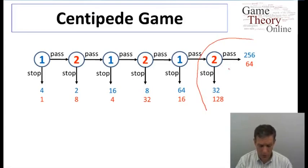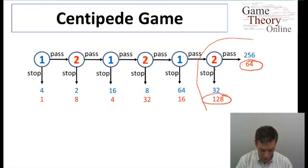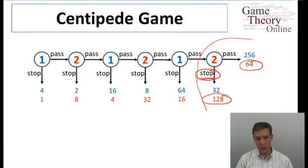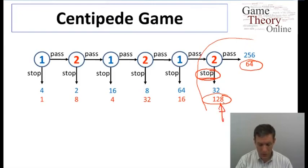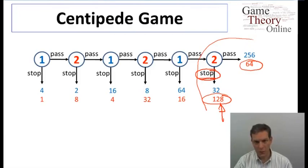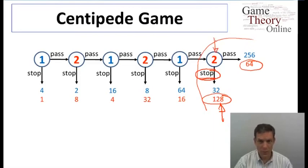For instance, player two, if called upon to move, has a choice of either passing or stopping. We look at the payoffs of 64 and 128. The conclusion is: if player two was ever put in this situation, they should stop. A rational player maximizing their payoffs has only a single action they could choose in that situation, which is to stop. Therefore, if we're consistent with maximizing behavior, the prediction is that player two should stop at this point.